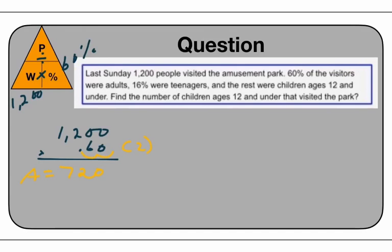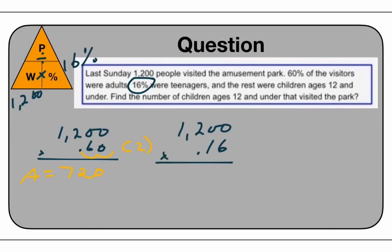We also need to solve for teenagers. When we solve for teenagers, the total number is still 1,200, but 16% are teenagers. So to solve for that, we say: what's 1,200 times 0.16? Remember how we turn that percent to a decimal — move the decimal over two spaces — then multiply. When you do this, it's going to be 192. So we know 720 were adults, we know 192 were teenagers. The question says the rest were children ages 12 and under — find the number of children ages 12 and under that visited the park.